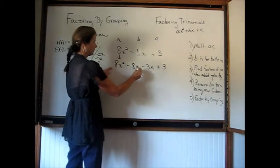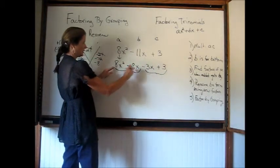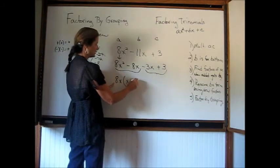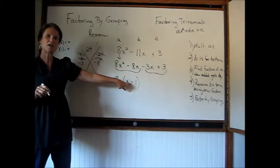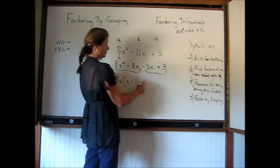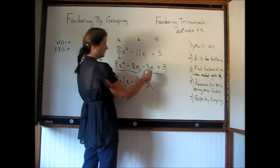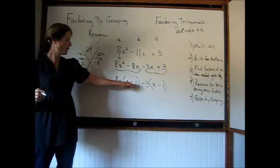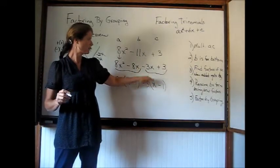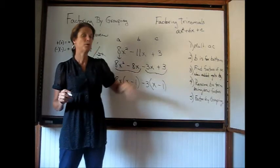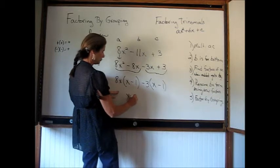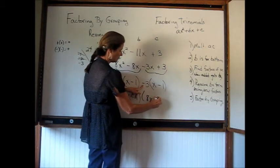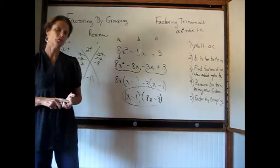Now we factor by grouping — group these two and group these two. What's in common? 8x. Division: 8x squared divided by 8x is x, and 8x divided by 8x is negative 1. Use the same sign — it's a minus sign. Same thing over here: factor out a negative 3, giving us x minus 1. Double check: 8x times x is 8x squared, 8x times negative 1 is negative 8x, negative 3 times x is negative 3x, negative 3 times negative 1 is positive 3. These two parentheses are identical, so we factor out. What's left: 8x here and minus 3 here — that's our answer. FOIL will work to check.